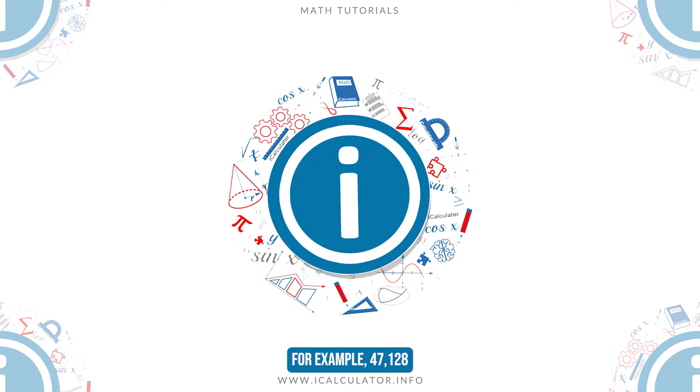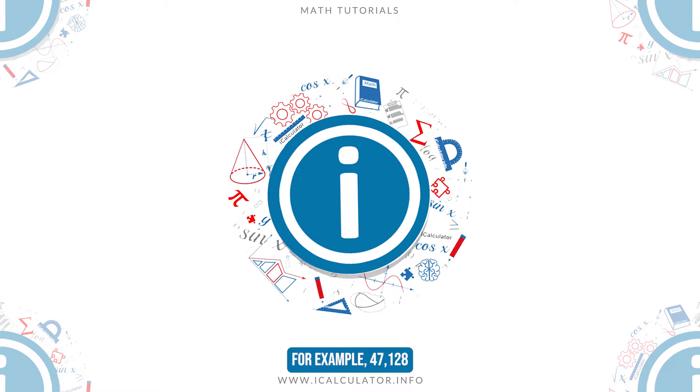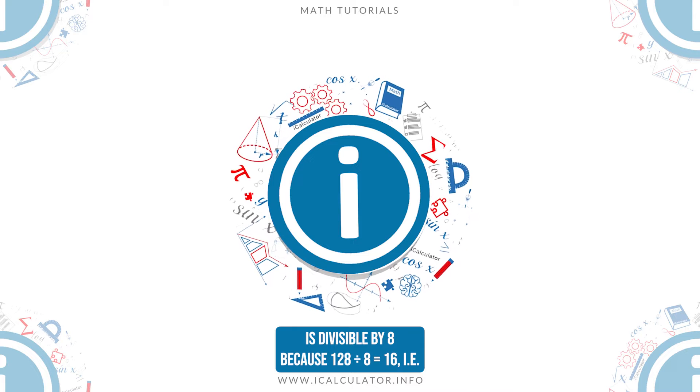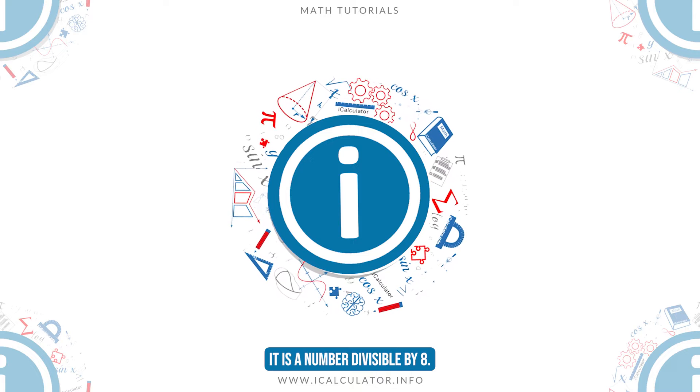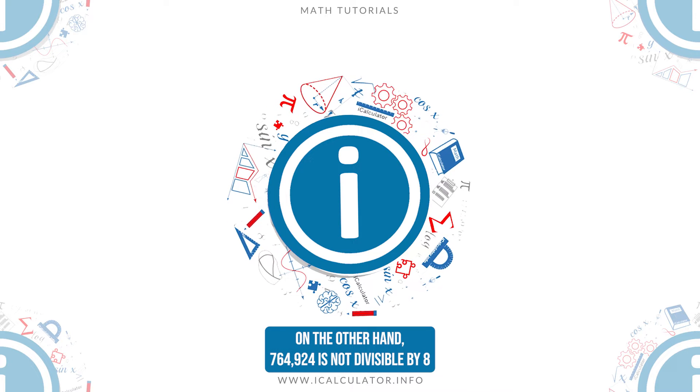For example, 47,128 is divisible by 8 because 128 divided by 8 is equal to 16, i.e., it is a number divisible by 8. On the other hand,